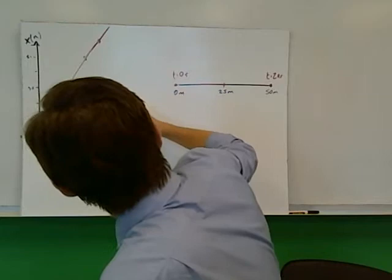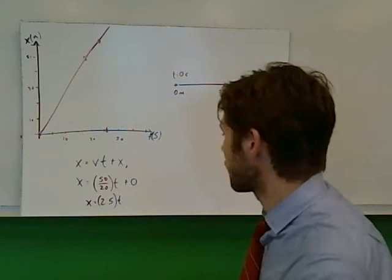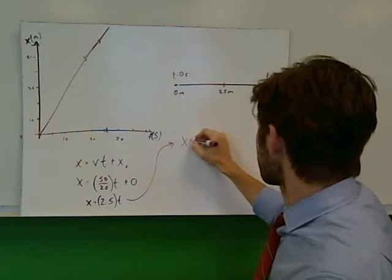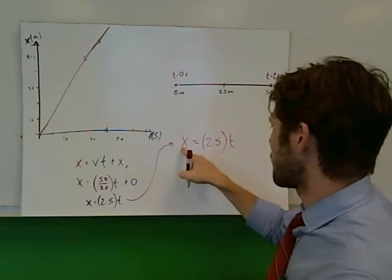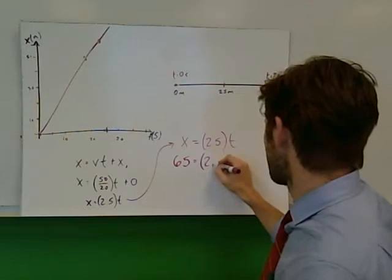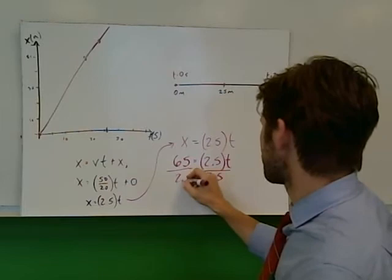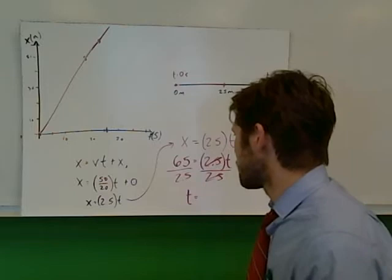This gives a value that looks like it's a little bit bigger than 25. We'll see if the number comes out the same on the equation side. So x equals 2.5 times t. I'd like to plug in for a certain position and find out what the time is. So 65 equals 2.5 times t. We'll divide by 2.5 meters per second on both sides.